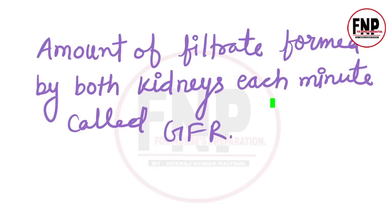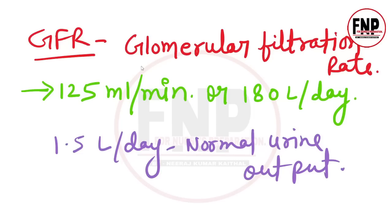दोनों kidneys द्वारा हर minute जितना filtrate बनाया जाता है उसे GFR यानि glomerular filtration rate कहते हैं। Normal GFR 125 ml per minute होता है। एक दिन में लगभग 180 liter fluid filtrate किया जाता है जिसमें से सिर्फ 1.5 liter urine के रूप में बाहर निकलता है और बाकी सब tubules द्वारा reabsorb कर लिया जाता है।